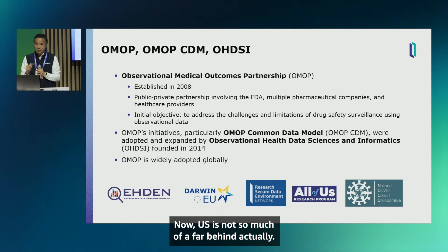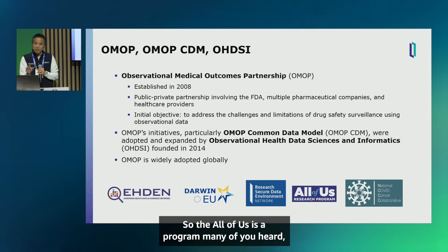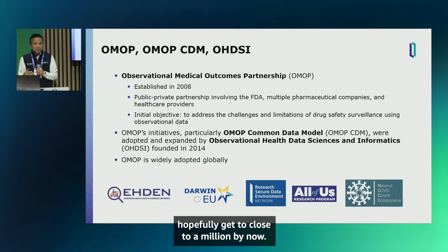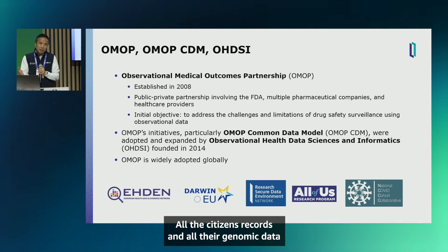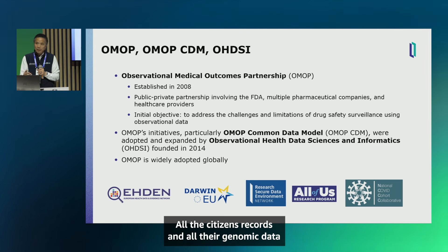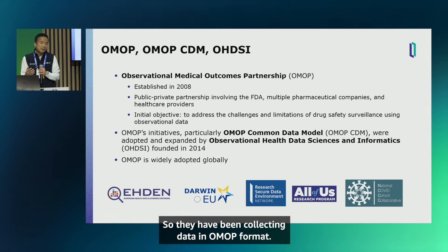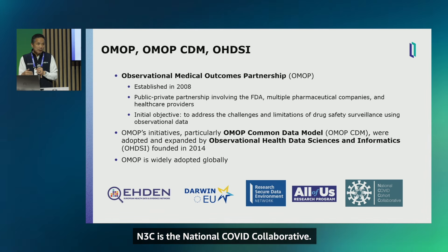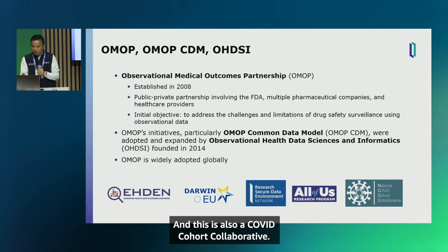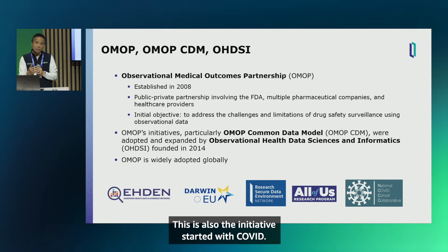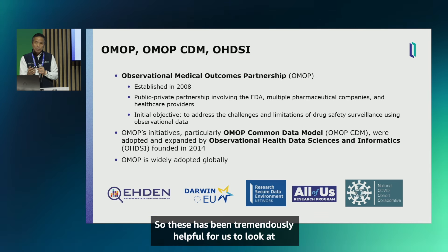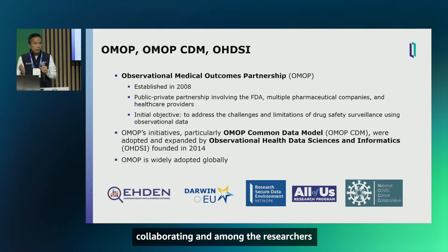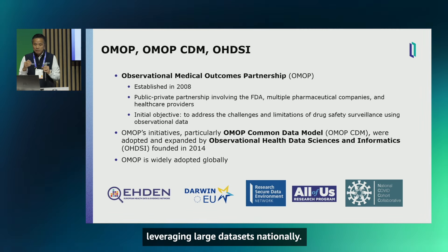The US is not far behind. The All of Us program aims to collect records and genomic data from close to a million citizens with long-term follow-up — all collected in OMOP format. N3C, the National COVID Cohort Collaborative, also uses the OMOP format. These initiatives have been tremendously helpful for enabling researchers to collaborate and leverage large datasets nationally.